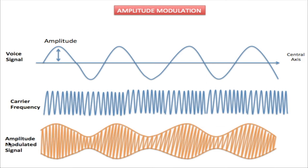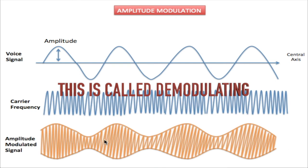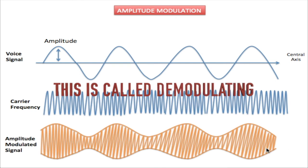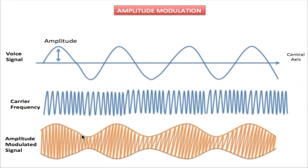The result is the amplitude modulated signal. As the amplitude of the voice signal goes high, the amplitude of the modulated signal goes high as well, following the same path of the voice signal. As the voice signal goes low, this goes low as well — so this is an exact replica of the voice signal controlling the amplitude of the carrier signal. When the receiver gets this information, it removes the carrier frequency, keeping only the top line, which is an exact replica of the original voice signal.